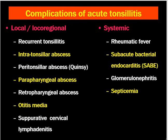The complications of acute tonsillitis include local and regional complications: recurrent tonsillitis (if recurrence is more than four times a year, surgery may be needed); intratonsillar abscess; peritonsillar abscess (quinsy), where pus collects between the tonsil and superior constrictor muscle — a very important exam topic; parapharyngeal space abscess, a dangerous condition; retropharyngeal abscess; otitis media via the Eustachian tube; and suppurative cervical lymphadenitis. Systemic complications include rheumatic fever, subacute bacterial endocarditis, acute glomerulonephritis, and occasionally septicemia.